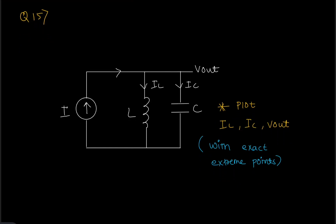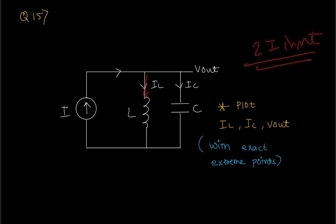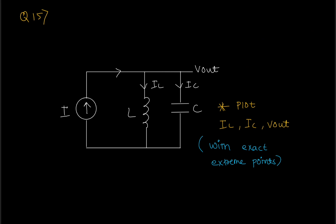They then asked if I was familiar with LC circuits. I said yes, so they gave me a short parallel LC circuit and told me to plot the inductor and capacitor currents and voltages. They asked why I was getting a sinusoidal voltage and why the inductor was getting twice the input voltage. All answers will be discussed in the upcoming videos.